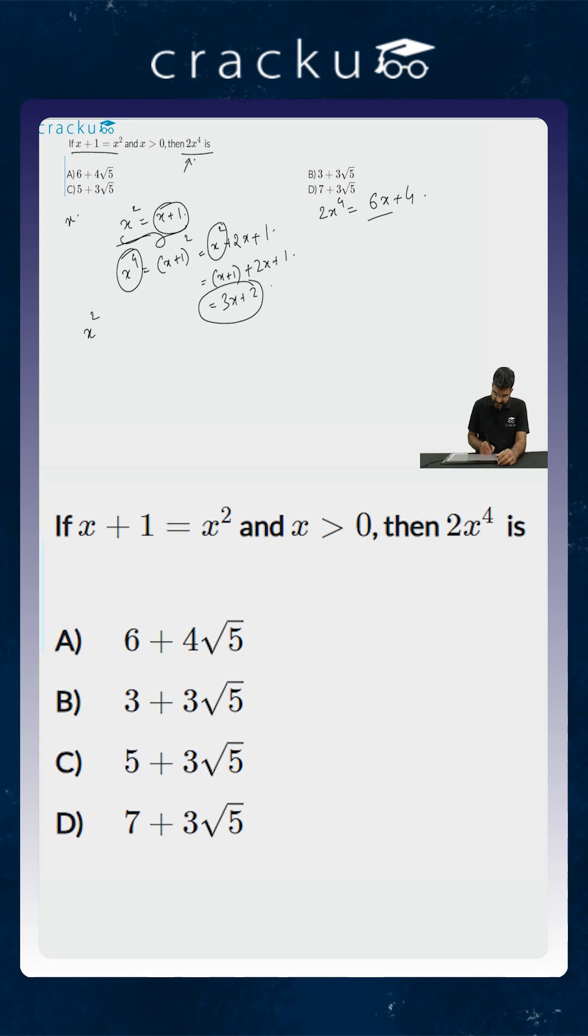So as x squared is equal to x plus 1, x squared minus x minus 1 is equal to 0, or x is equal to 1 plus or minus square root of b squared is 1 plus 4, all divided by 2. This is equal to 1 plus or minus root 5 by 2.